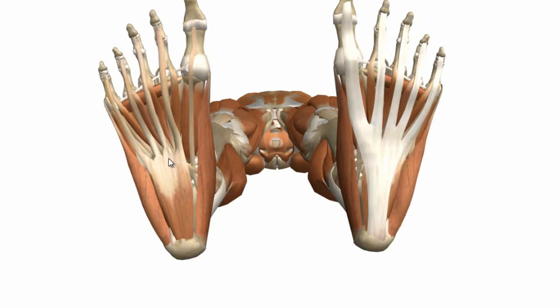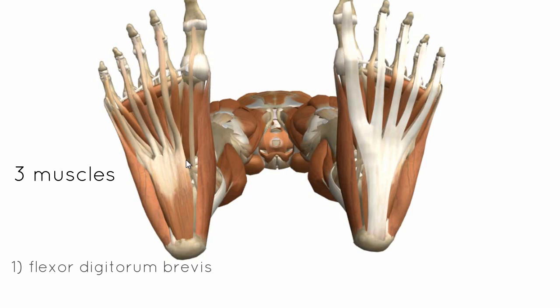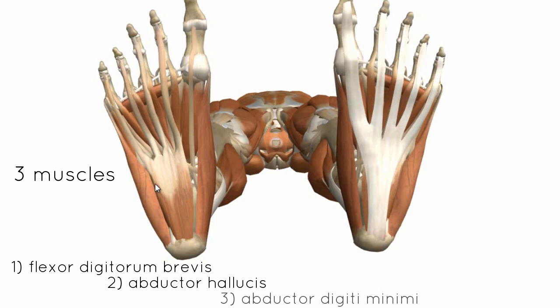I'll start with the central muscle. In the plantar group, you've got four different layers. The first layer is the most superficial, and then there are three other layers. There are three muscles in this first group: the flexor digitorum brevis, the abductor hallucis, and the abductor digiti minimi.